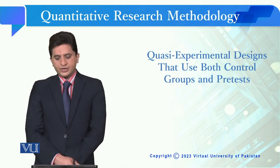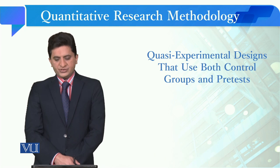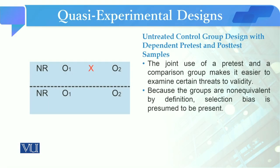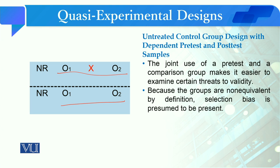Dear students, today we are going to study quasi-experimental designs in which we use both control groups and pre-tests. The basic design uses one intervention group and one control group. Both groups have pre-testing, which allows us to check for selection bias when selecting participants. We can judge at the time of pre-testing that there was no selection bias in this framework.